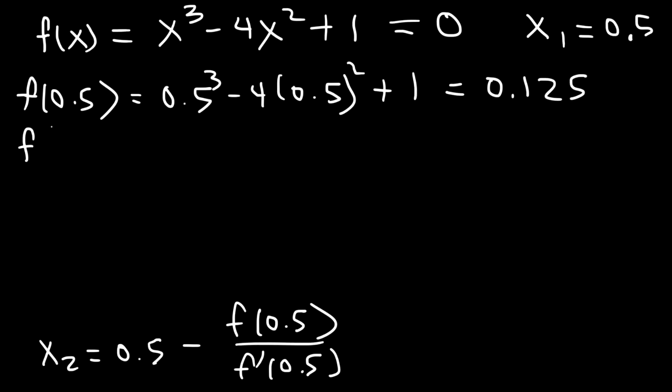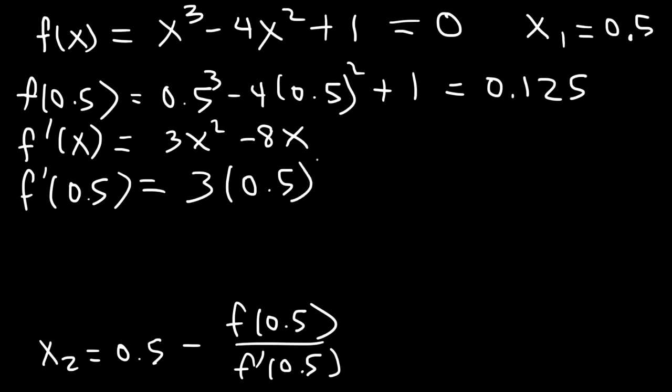So this is equal to 0.125. Now, we need to find the first derivative. The derivative of x cubed is 3x squared, and the derivative of 4x squared is 8x. So now, with the first derivative, we need to plug in 0.5 as well. So this is going to be 3 times 0.5 squared minus 8 times 0.5. So this will give you negative 3.25.